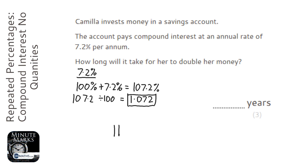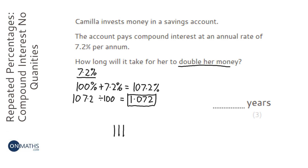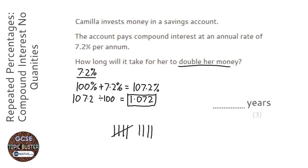If I press equals again it applies the same function, multiplying by 1.072 again — this is the third year, giving 1.23. To double the money I need an answer of two or more, so I keep pressing equals: 1.32, 1.41, 1.51, 1.62, 1.74, 1.86, and then finally on the 10th time I get 2.0042.